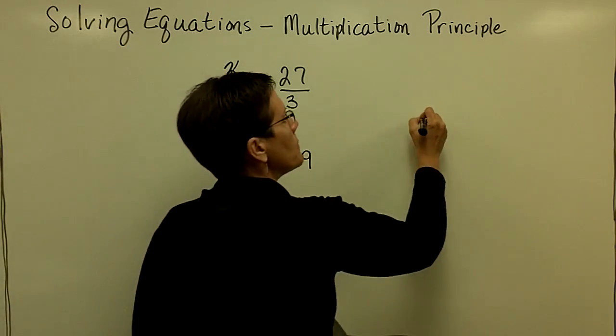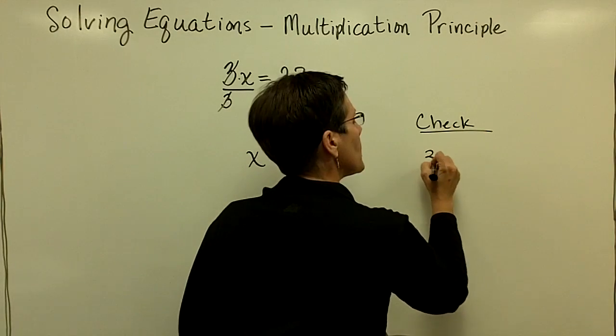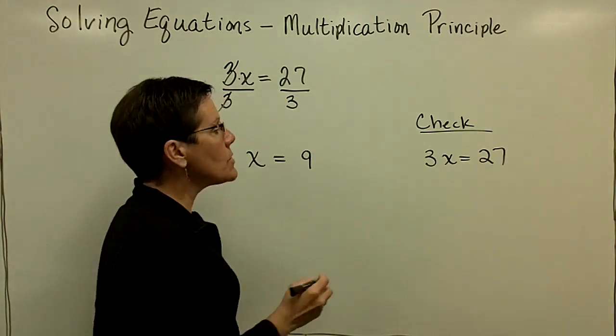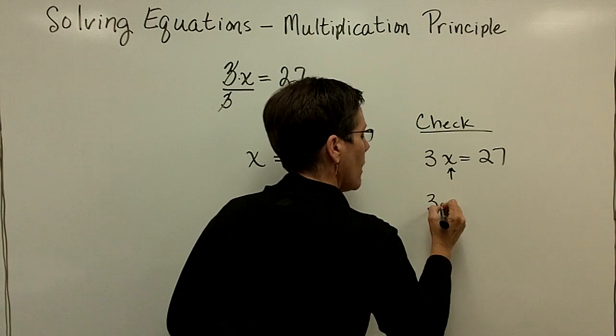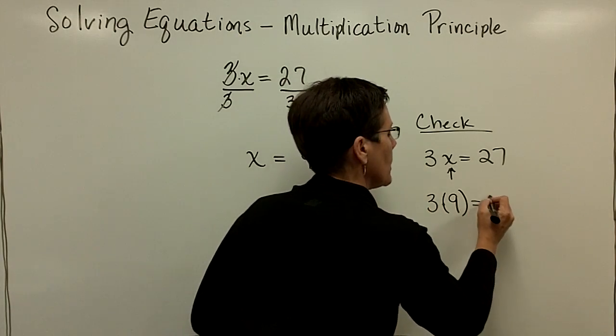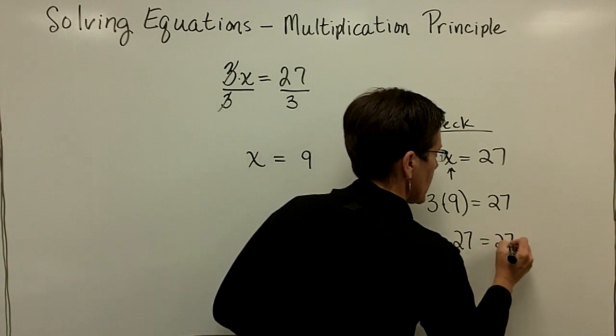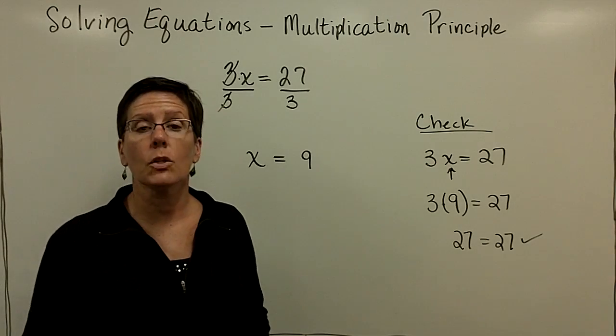Again, please remember that the original problem here was 3x equals 27. And so when you substitute in for x a value of 9, what you have here is 3 times 9, or you can put parentheses around it, equals 27, and you can say, yup, 3 times 9 is 27, and 27 does equal 27, and you can check and see that you were correct.